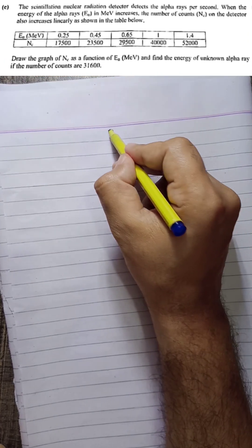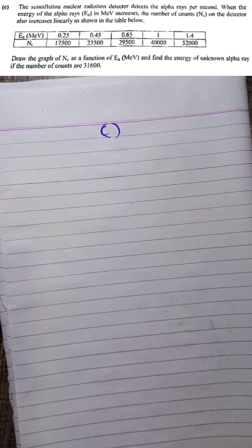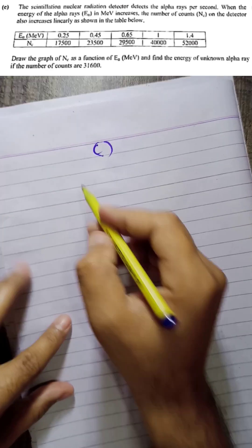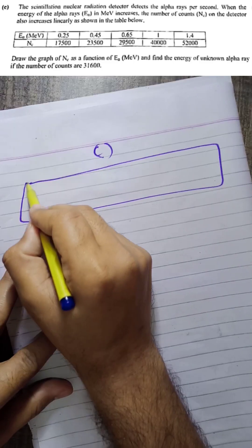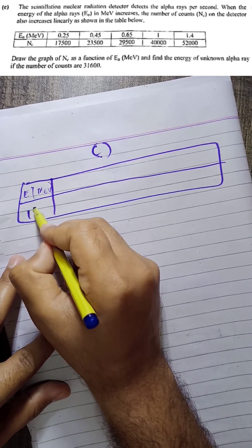Now Question number 8, Part C: A scintillation nuclear radiation detector detects alpha rays per second. When the energy of the alpha rays E (in mega electron volts) increases, the number of counts Nc on the detector also increases linearly as shown in the table. Draw the graph of Nc as a function of energy in MeV and find the energy of an unknown alpha ray if the number of counts is 31,600.